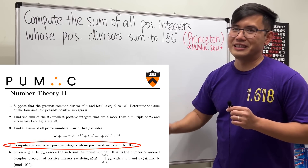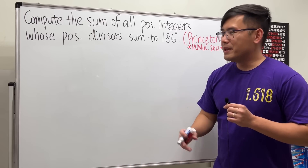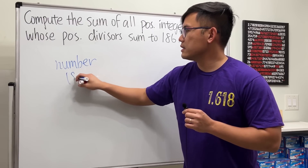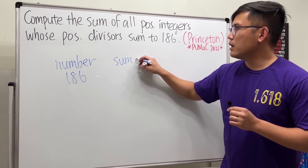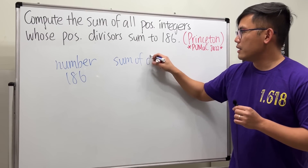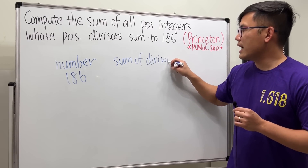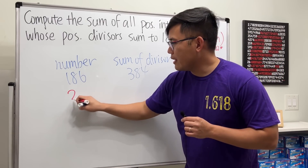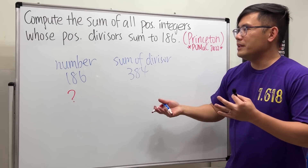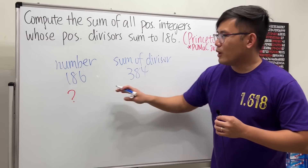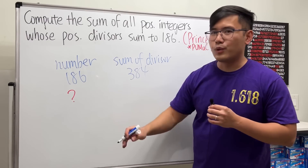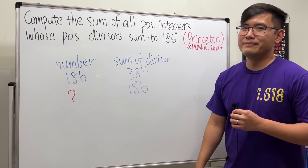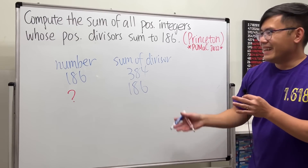This is not the same as what we did earlier. Earlier we were given the number 186, found the sum of its divisors, and saw that it was 384. Right now we don't even know what number we are going to have, or how many of them, but we want the sum of the divisors of that number to equal 186.